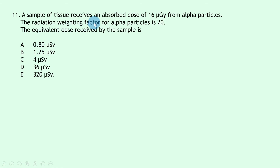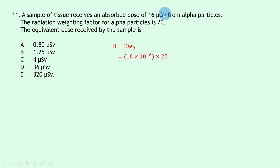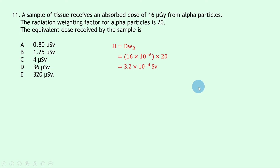Question 11 gives an absorbed dose of 16 micrograys from alpha particles with a radiation weighting factor of 20. Using H = D × W_R: 16×10⁻⁶ × 20 = 3.2×10⁻⁴ sieverts, which is the same as 320 microsieverts — answer E.